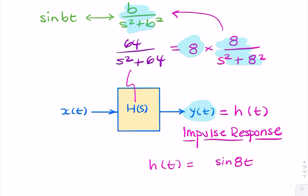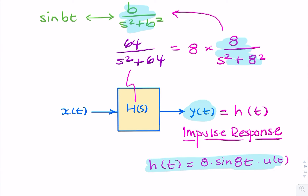We've got this 8 that's multiplied by the sine, so that gives us 8 sine(8t). And for a causal system, because we're looking for the impulse response, we always multiply by a unit step. So our final answer is 8 sine(8t) u(t).